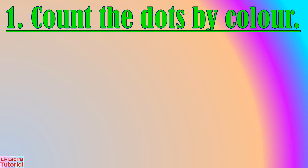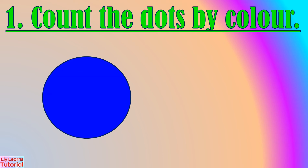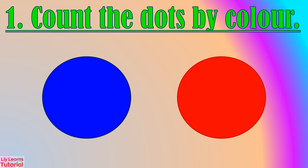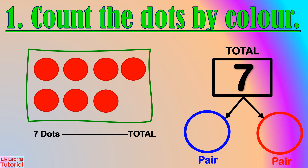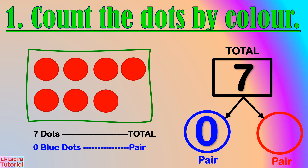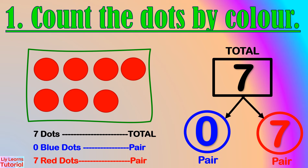In this example, we'll count the dots by color using blue and red dots. We count the blue dots. So, the number pair is 0 and 7.